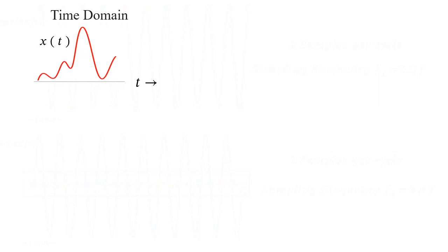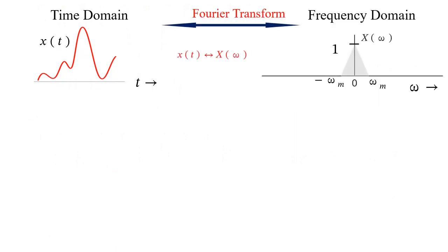Let's start with a band-limited signal. From its Fourier transform, it can be observed that the maximum frequency present in the signal is omega_m radians per second, and there are no frequency components greater than omega_m. Moreover, it is a low-pass signal in nature. The bandwidth is given by the highest frequency component minus the lowest frequency component, so the bandwidth of the signal is omega_m minus 0, which equals omega_m.